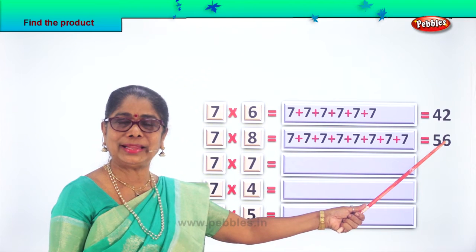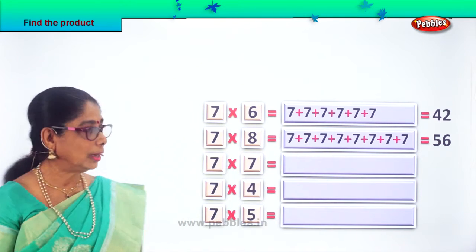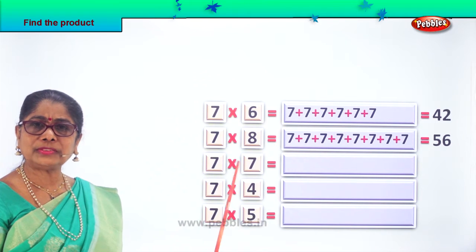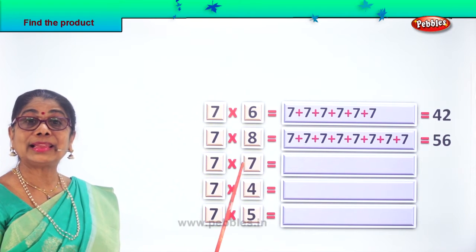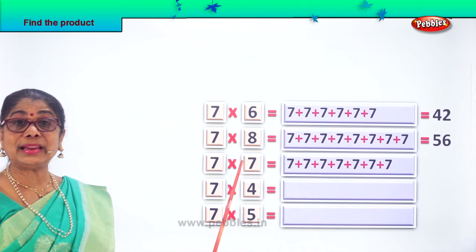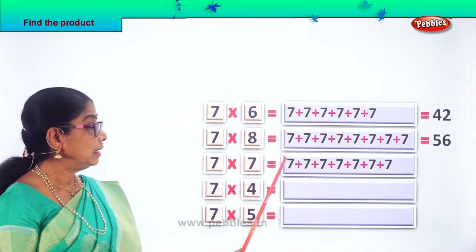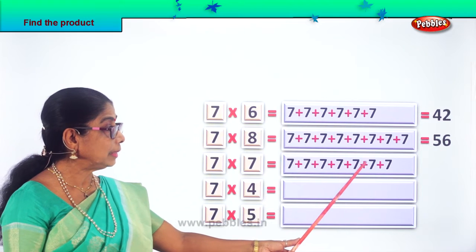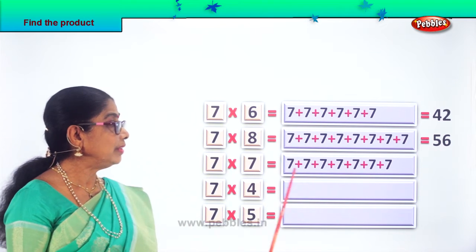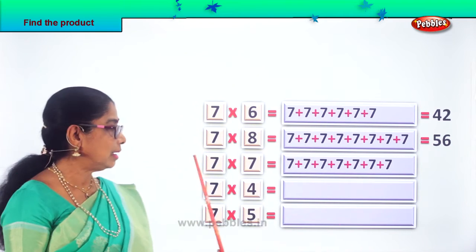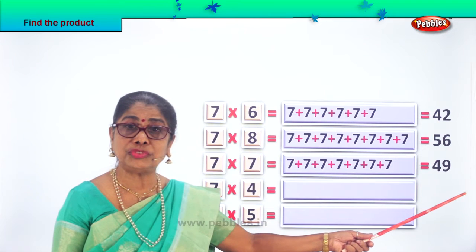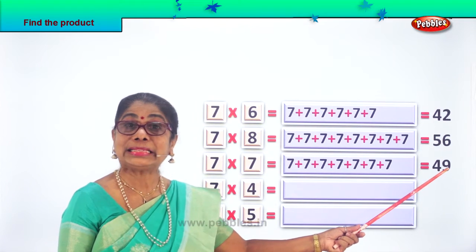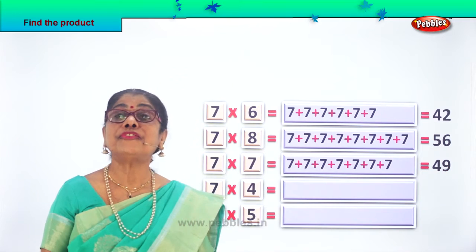Are you enjoying the exercise? The next — what is 7 into 7? What is the product of 7 into 7? Using repeated addition, we write 7 seven times: 7 plus 7 plus 7 plus 7 plus 7 plus 7 plus 7 — 7 times. What are 7 sevens? 7 sevens give you the answer — 49. 7 sevens are 49.